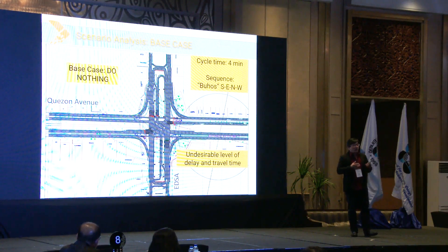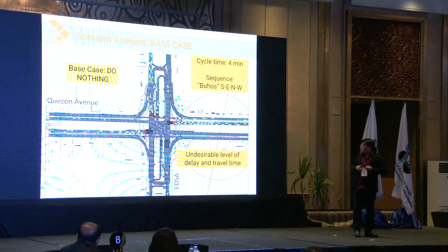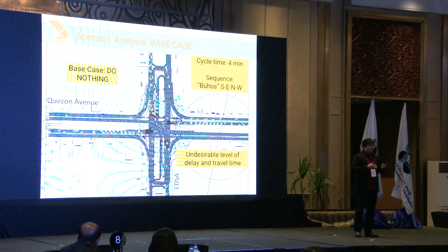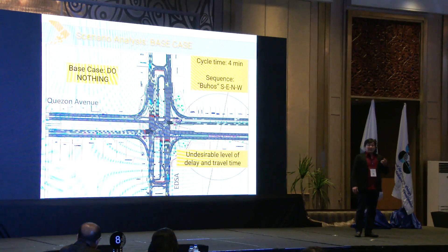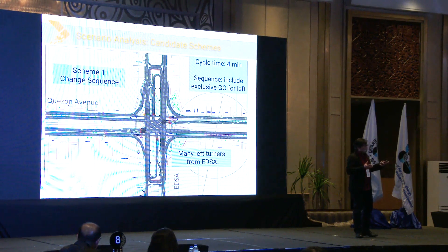The sequence continues as a cycle. It takes four minutes, and we call that the cycle time. In this particular intersection, there is an undesirable level of delay and travel time. The stopped vehicles actually form queues or lines, and that is the cause of the undesirable level of delays.